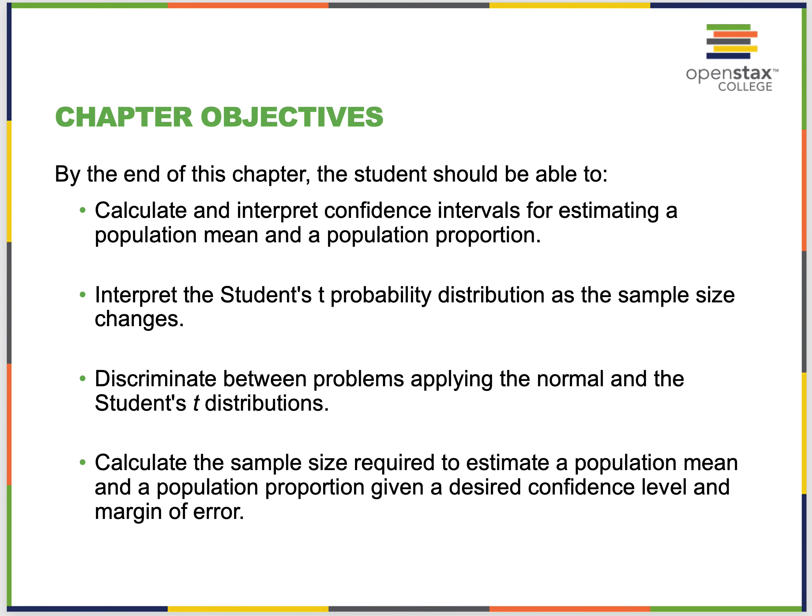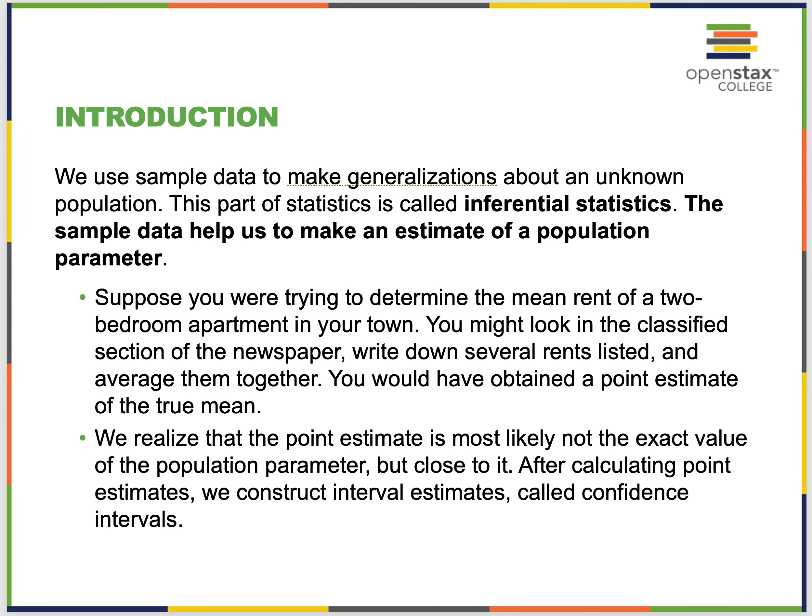We use sample data to make generalizations about a population. The population has a mean and standard deviation, and those are called parameters. We estimate those using sample statistics for the mean and standard deviation. The sample data helps us make an estimate of the population parameter — we can make an inference about what the population parameter is.